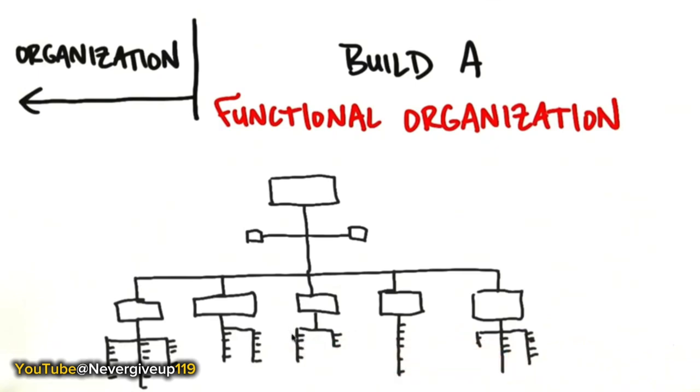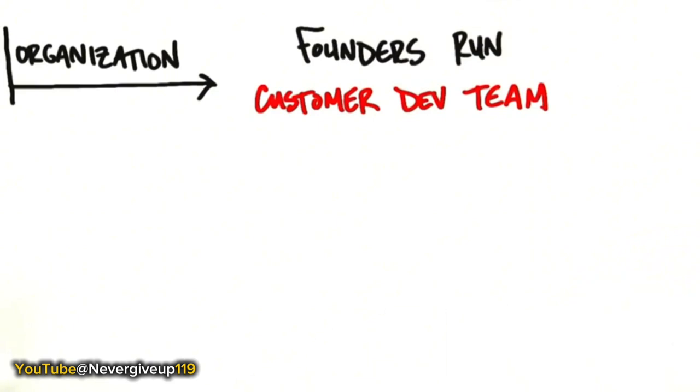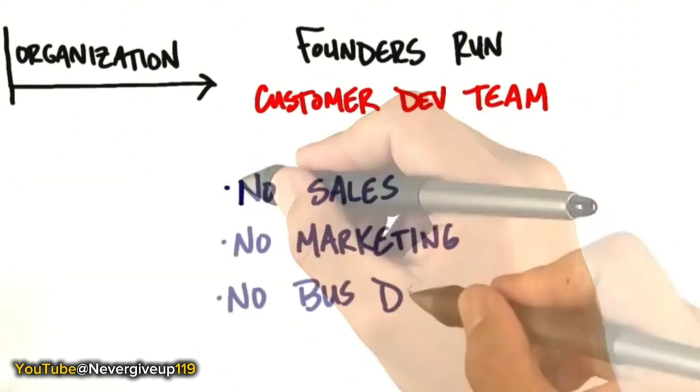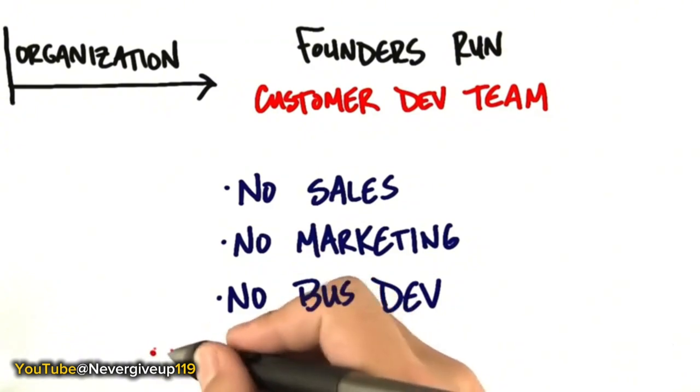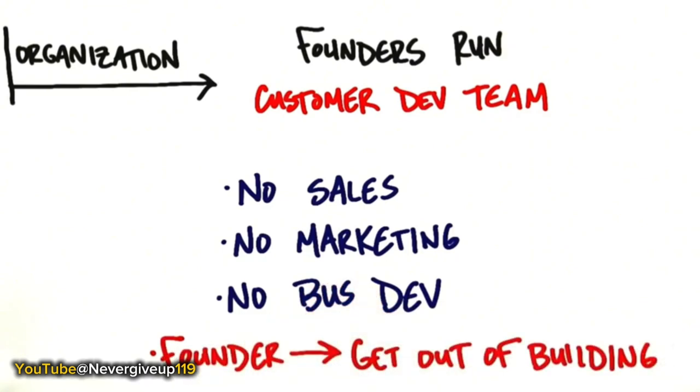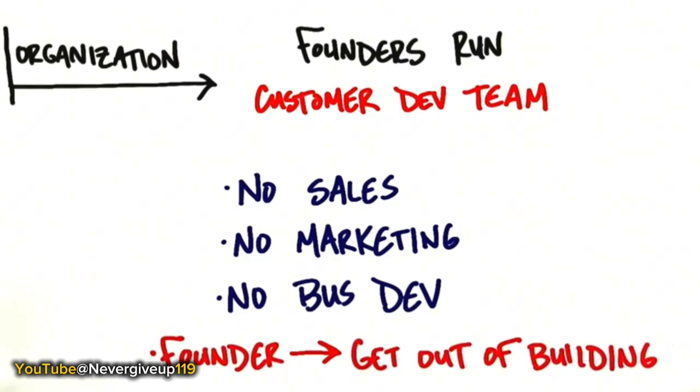We now know that functional organizations actually are the wrong way to set up sales marketing and BizDev on day one. What we now know is that the founders need to run what's called the customer development team. We're not going to have sales marketing and BizDev on day one. We're not going to hire a VP of sales on day one. We're actually going to have the founder get out of the building. It's a really big idea to understand for organization, you need the founders spending at least 20% of their time outside the building understanding customers' problems and needs before you start organizing in functional organizations and silos.